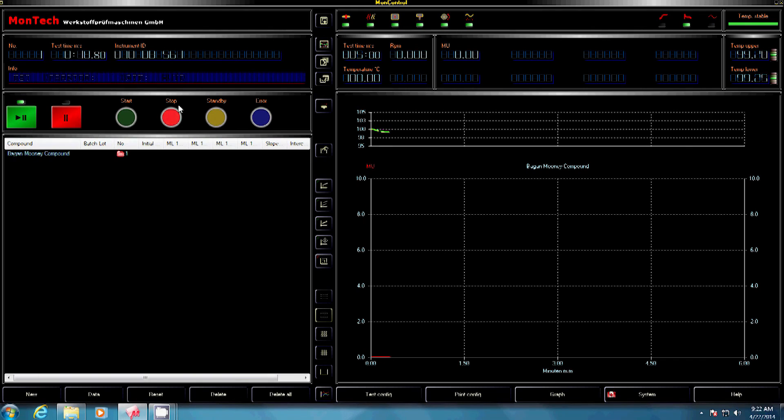During a typical Mooney viscosity test, the rotor is preheated for one minute. Afterwards, the rotor is turning at a speed of 2 rpm embedded in the material and the torque on the driveshaft is measured, converted to Mooney units and plotted on a graph of the computer.